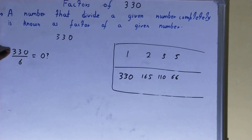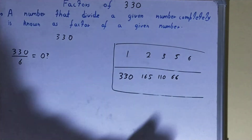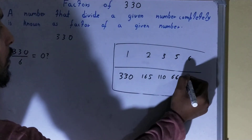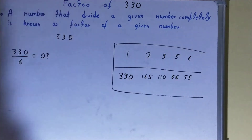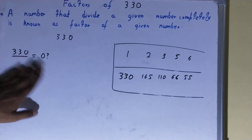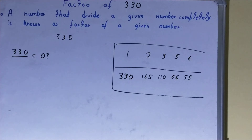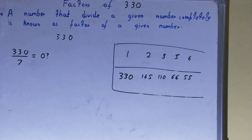After 5, we will check with 6. With 6 also it is possible. So 6 is a factor. And 6 into what times? 6 into 55 times. So 6 is a factor and 55 will also be a factor.